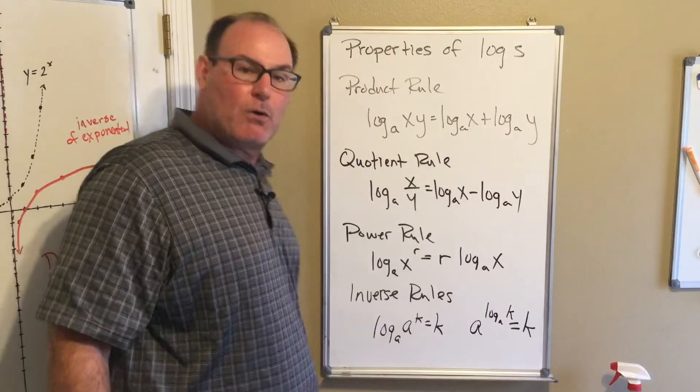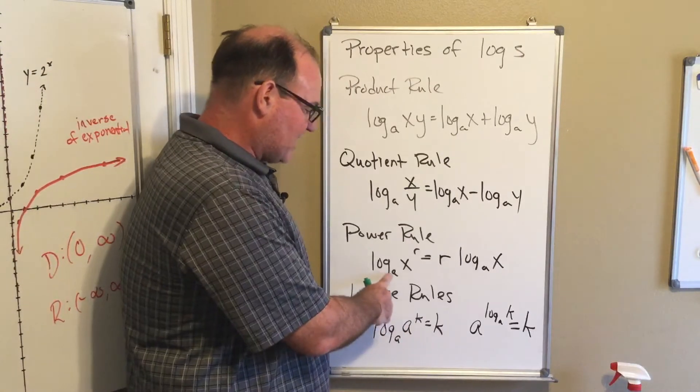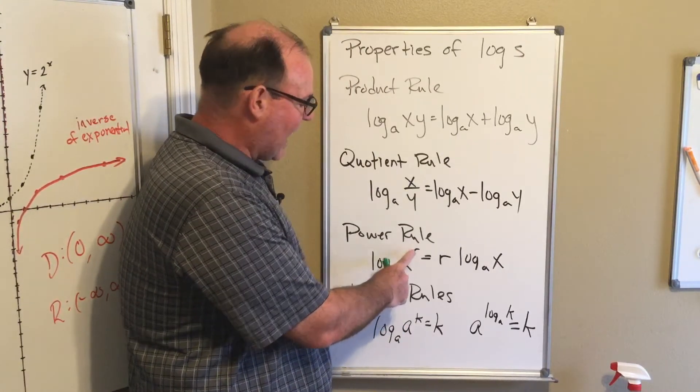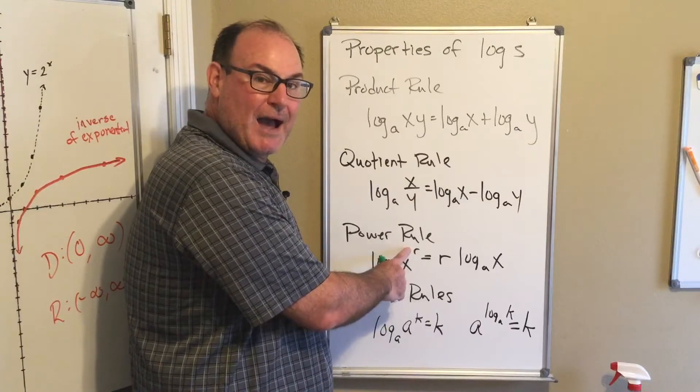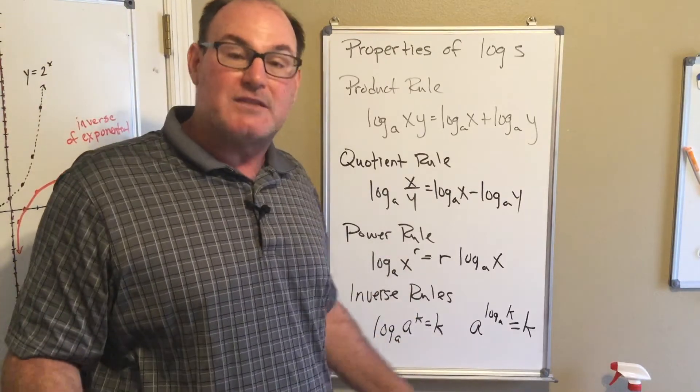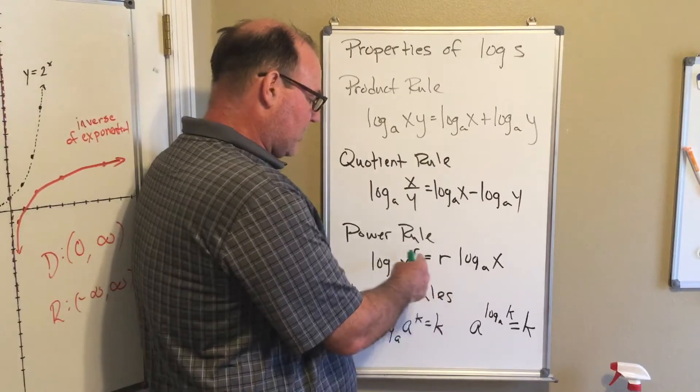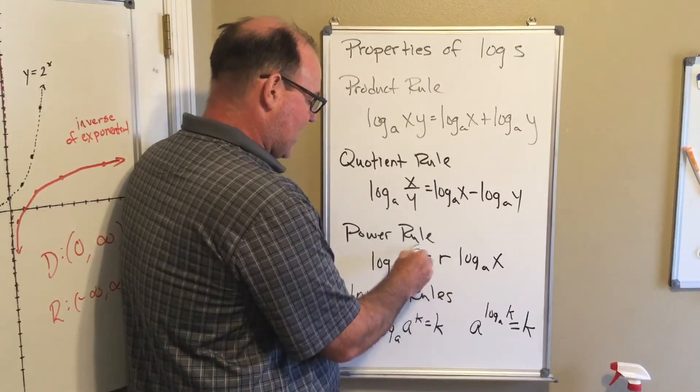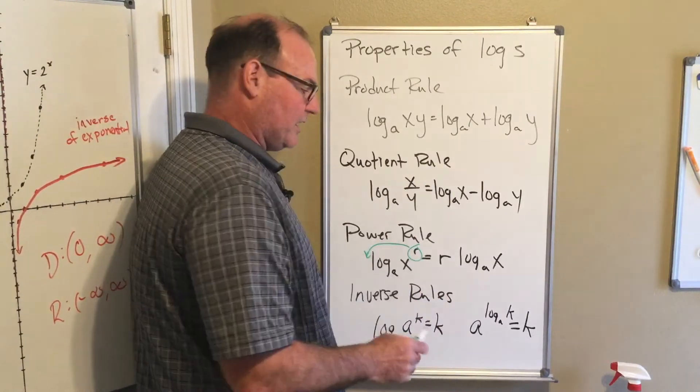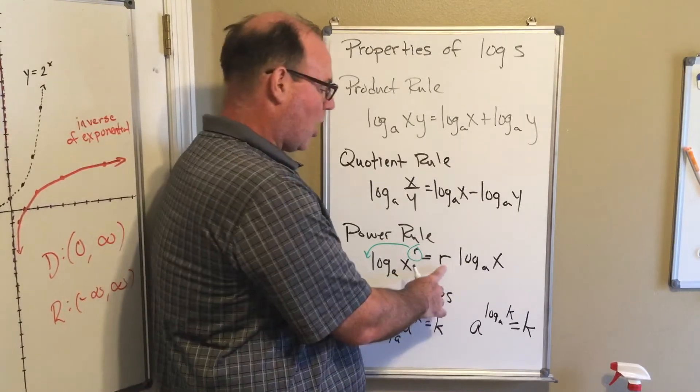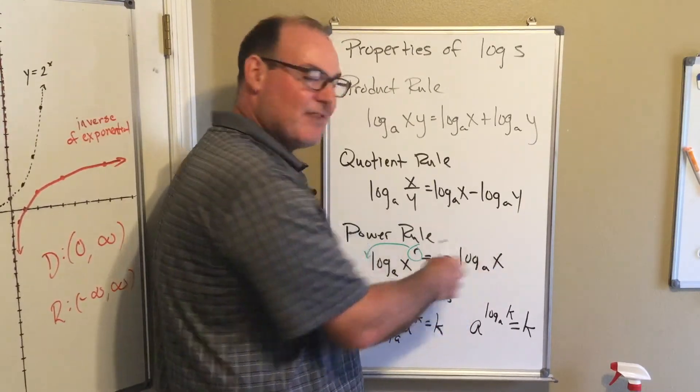The next one's called the power rule. If I'm taking the log base a of x to the r power, so I have something raised to a power, then what you can do because of the properties of exponents is you can bring the power and drop it down into the front. And so it becomes a coefficient r times the log base a of x.